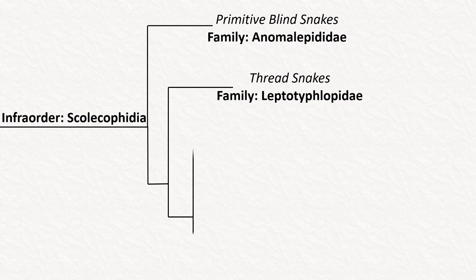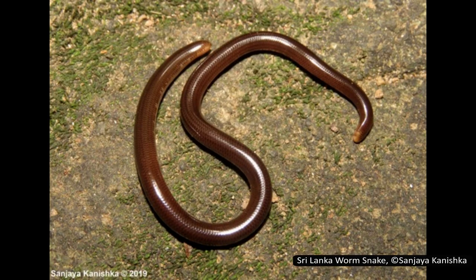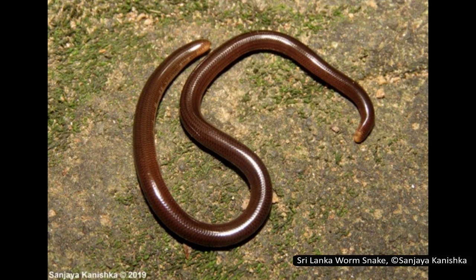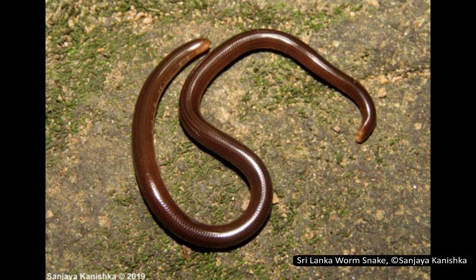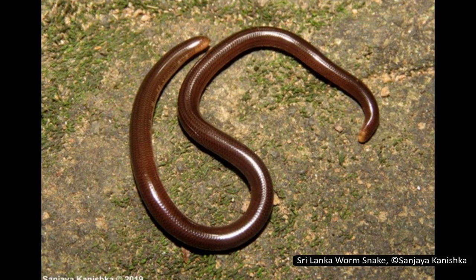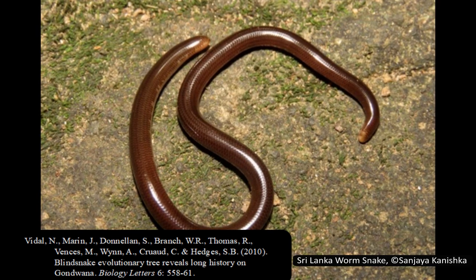The family Gerrhopilidae, or the Indo-Malayan blind snakes, contains around 30 species, though an exact number is hard to determine due to how little is known about them. There is one genus with 29 species, but a potential second genus with one species is sometimes assigned here and sometimes to Typhlopidae. This entire family was only formally created in 2010 by Vidal et al. — before that, these species were all in Typhlopidae. They are found in parts of Asia, including India and Southeast Asia.